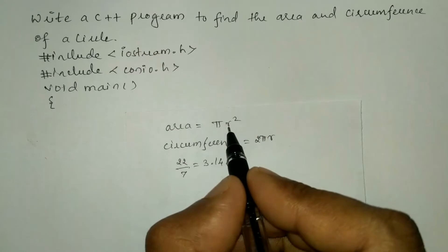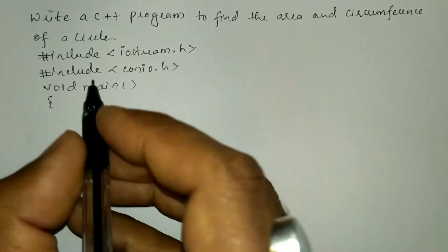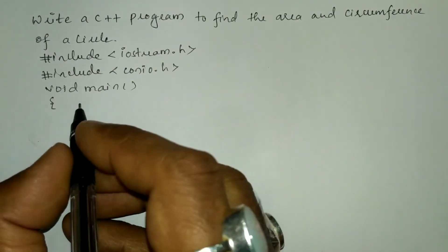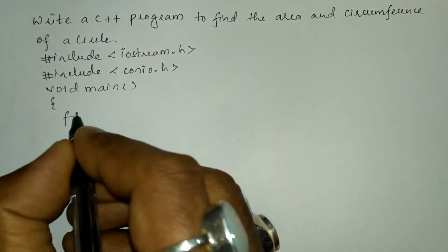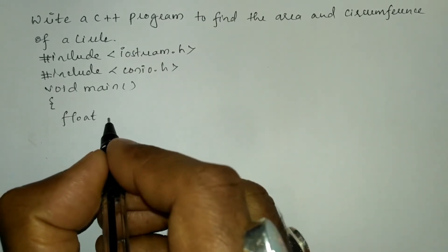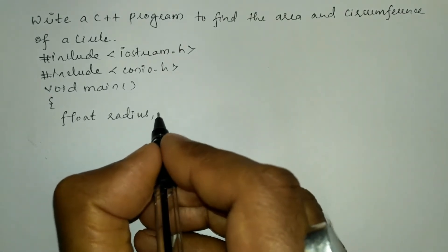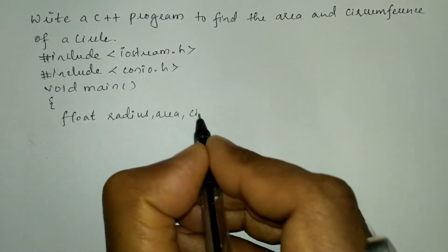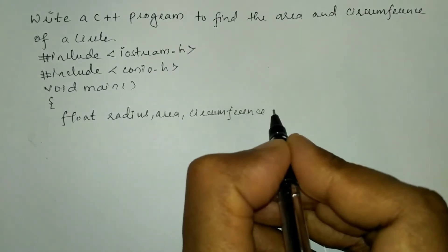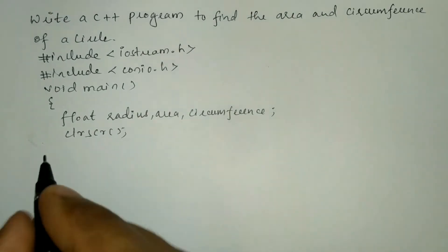We are going to replace the pi value with this constant value, and r is the radius of the circle that we will receive from the user. Now let us write the variables of type float — real number type of data. I am going to write the variables: radius, area, and circumference, then put a semicolon.